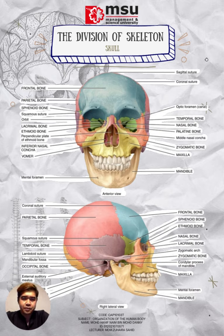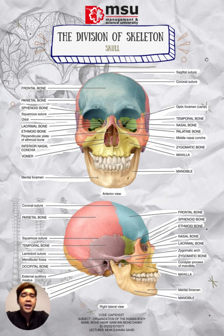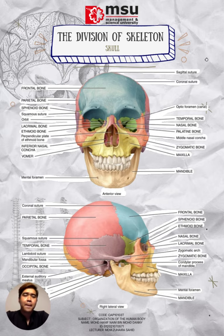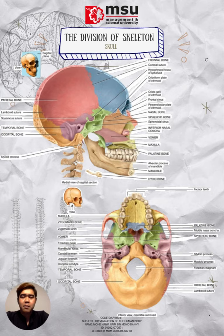Let's start with the skull. The cranium or skull is the skeletal structure of the head that supports the face and protects the brain. It is subdivided into the facial bones and the braincase or cranial bowl. The facial bones underlie the facial structure, form the nasal cavity, enclose the eyeballs, and support the teeth of the upper and lower jaws. The rounded braincase surrounds and protects the brain and houses the middle and inner ear structures. In the adult, the skull consists of 22 individual bones, 21 of which are immobile and united into a single unit. The 22nd bone is the mandible — the lower jaw — and the only movable bone of the skull. Now let's look at the parts and labels.